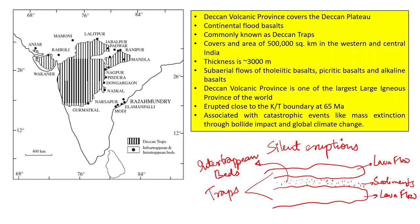The Deccan Traps are huge and cover an area of 500,000 square kilometers in the western and central part of India. The average total thickness is approximately 3,000 meters. These are important deposits of tholeiitic basalts, picritic basalts, and alkaline basalts.